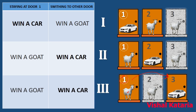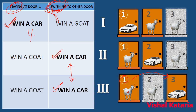This table clearly shows that staying at door number one, you will win a car in only one case. But if you switch to the other door, you will win a car in two different cases. This means winning a car has double the probability if you switch. The probability of winning a car if you stick to door number one is 1/3, while switching gives a probability of 2/3 — which clearly shows that we must switch in such conditions.